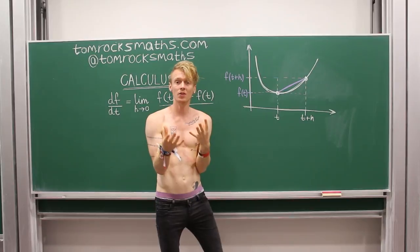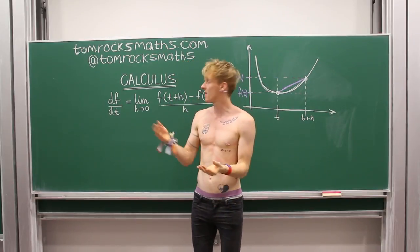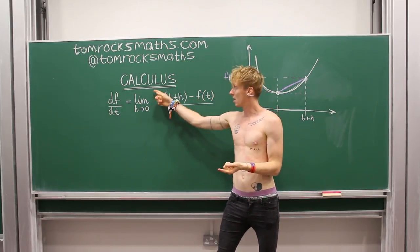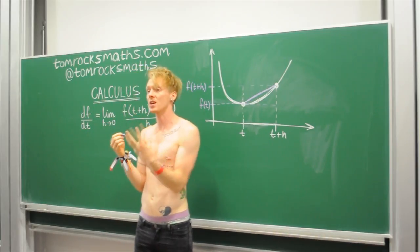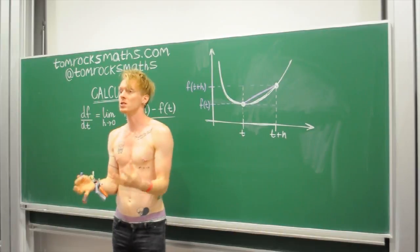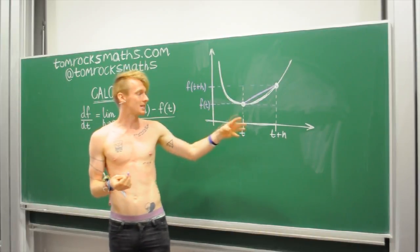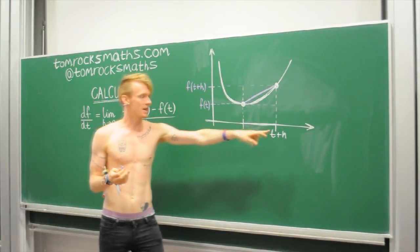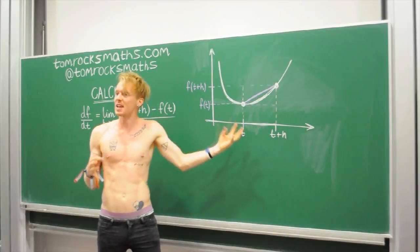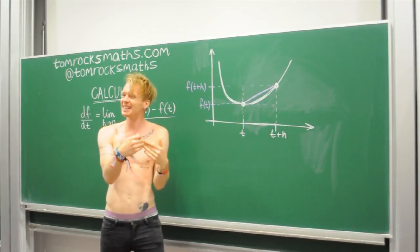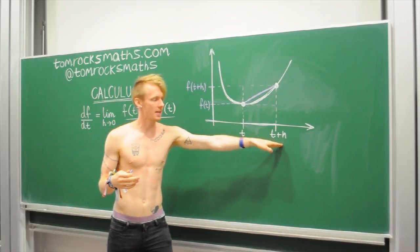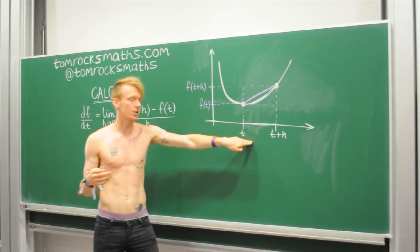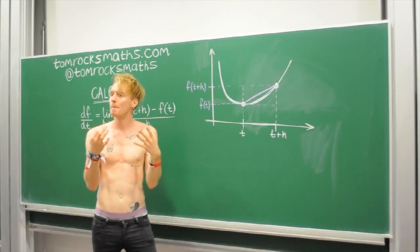And you'll hopefully have noticed that that is exactly what's in here. Now, what taking the limit as H tends to zero means on a graph is basically this point here, our T plus H, our second point. It just means take that closer and closer and closer to our original point.